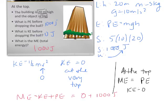And that's true, always, at the very top of an object's path. If you throw it up or even if you're dropping it, and at the very, very, very top, the highest point it can reach, ME is equal to just the PE because KE is zero.